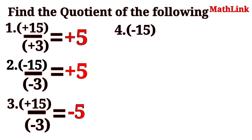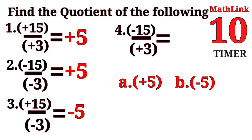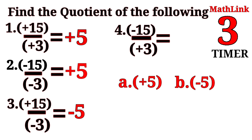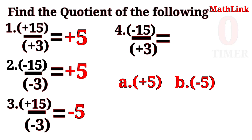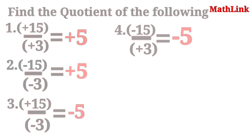Number 4: Negative 15 divided by positive 3 is equal to? Letter A: Positive 5. Letter B: Negative 5. The correct answer is letter B, negative 5 — negative sign because the two integers have different signs.